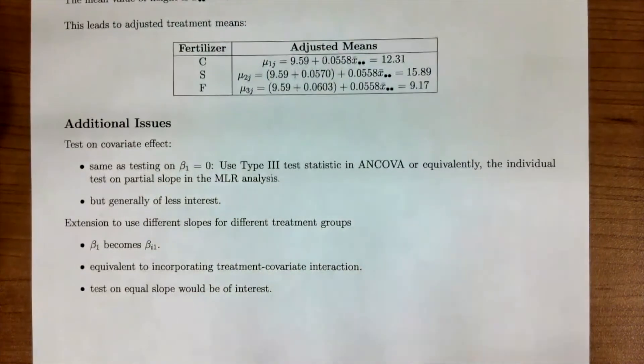There are some additional things that we can talk about. So you can test on the covariate effect. Testing is the same. You want to see if beta 1 is 0 or not. You would still want to use the type 3 test statistic in ANCOVA. This is similar to the idea of the individual tests on the partial slopes. Typically, though, this is less of an interest and we're more interested in how the treatments differ.